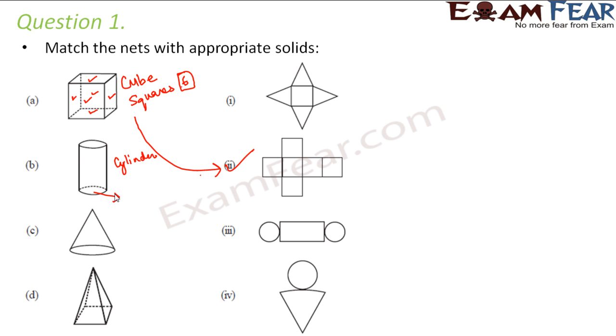The second one is a cylinder. What are the surfaces in a cylinder? At the top and bottom you have two circular surfaces, two circles basically, and the body of the cylinder is nothing but a rectangle. So you need two circles and one rectangle. Where do you have two circles and one rectangle? Here. So this is the right match for cylinder.